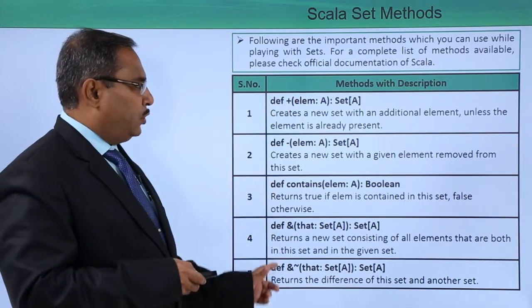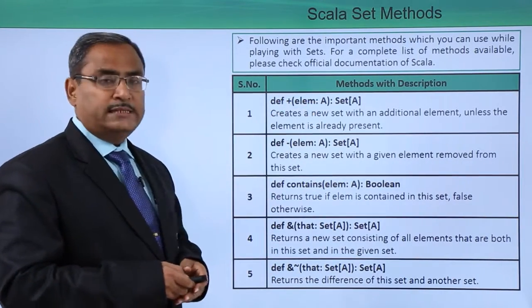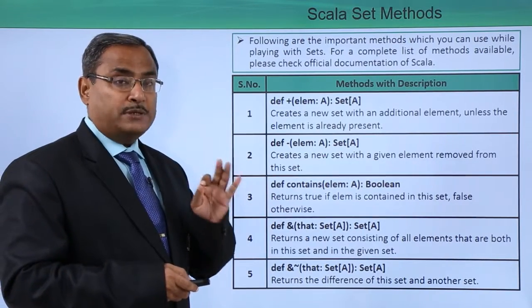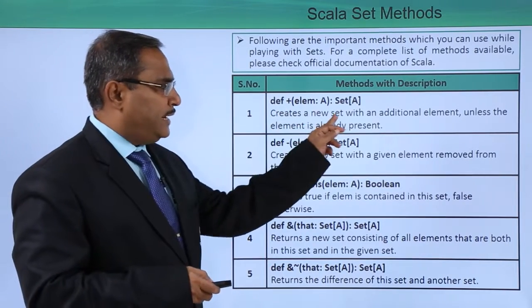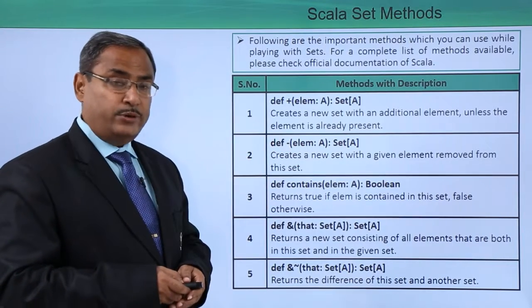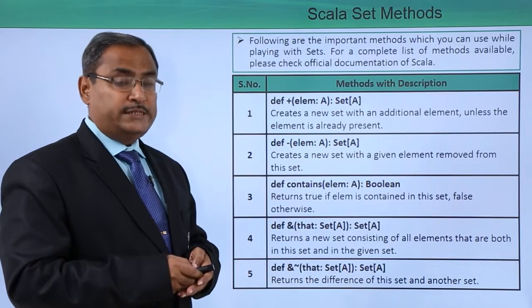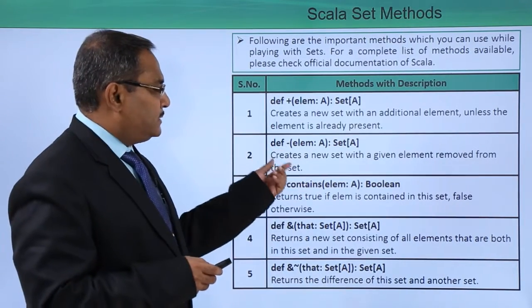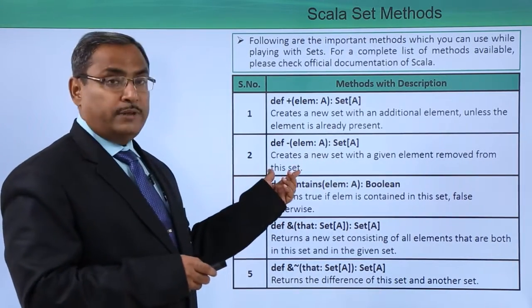Here we have different methods with a one-line description denoting the purpose of each method. The plus method creates a new set with an additional element unless the element is already present. We know that in the case of a set, all elements must be of distinct values. The minus method creates a new set with a given element removed from this set.